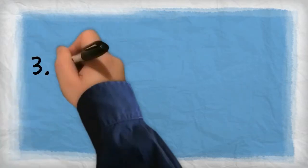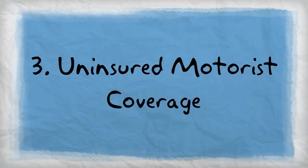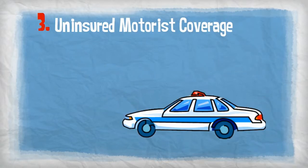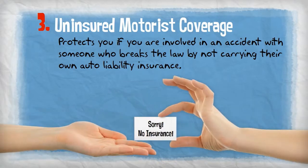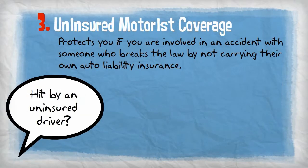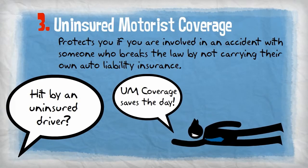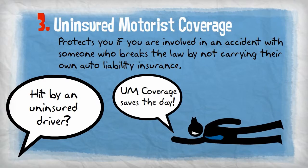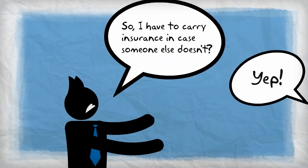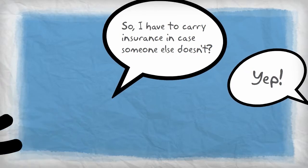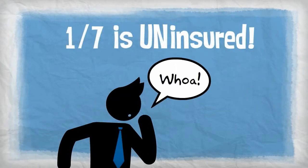The third part of personal auto insurance is uninsured motorist coverage, or UM coverage. UM coverage protects you if you're involved in an accident with someone who breaks the law by not carrying their own auto liability insurance. It does this by helping pay for any medical expenses you incur as a result of getting hit by an uninsured driver. And although it may not sound fair, these types of accidents do happen. According to statistics, nearly one in seven drivers on the road is uninsured, which makes protecting yourself an absolute necessity.